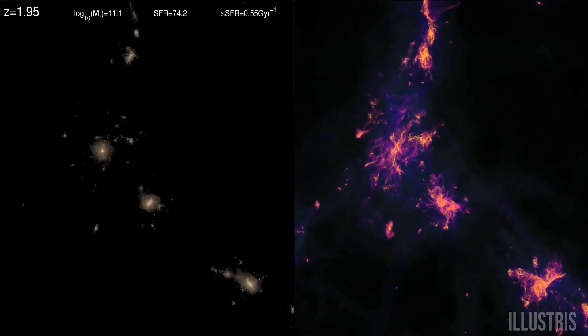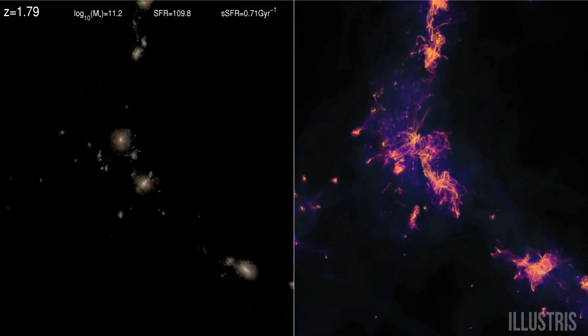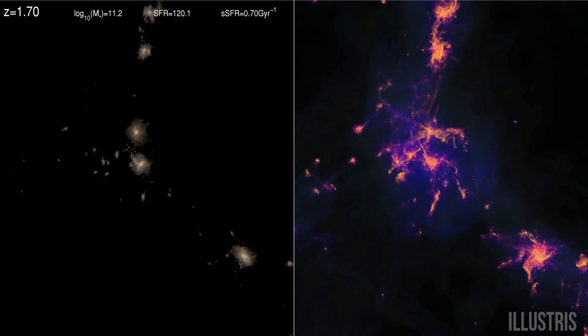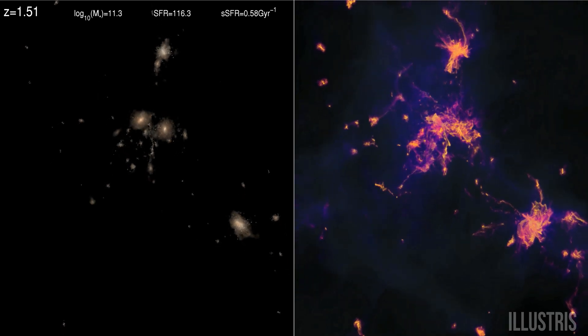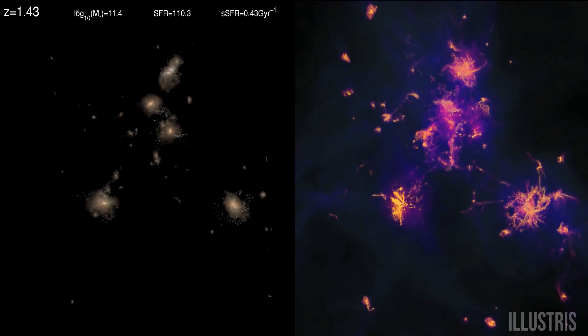On the left is a closer view of galaxies that are falling into one of the central regions. On the right is the gas that envelops these galaxies.